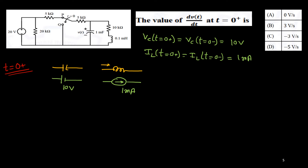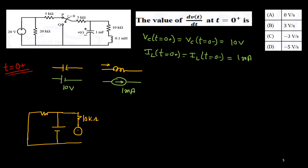Now the switch has moved to Q, so the P-side circuit is isolated. The Q-side circuit is redrawn: it is a short circuit path, then a 5 kilo ohm resistance, then the capacitor replaced by a 10 volt voltage source, then a 10 kilo ohm resistance, and the inductor replaced by a 1 milliampere current source. The resistance is 5 kilo ohm.